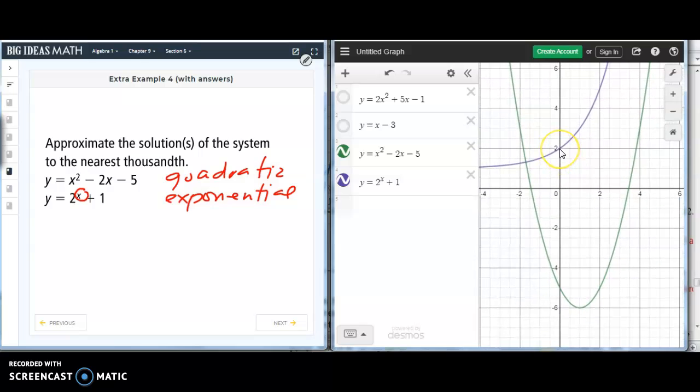It will intersect at 2 because that's your initial value. Then you can see that the asymptote line is y is equal to 1 because this represents a vertical translation.